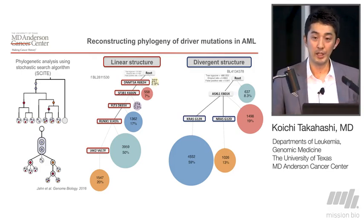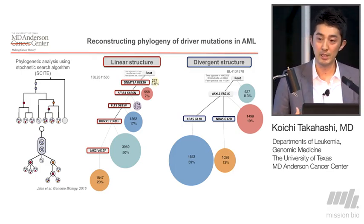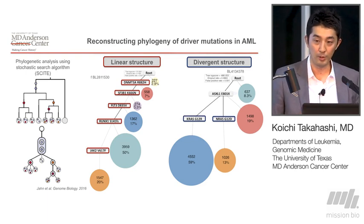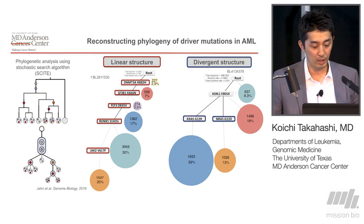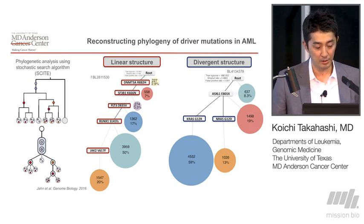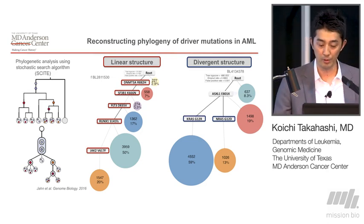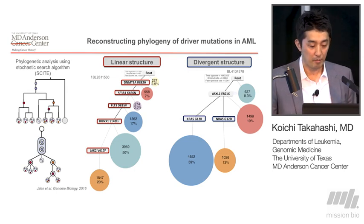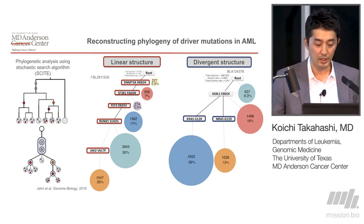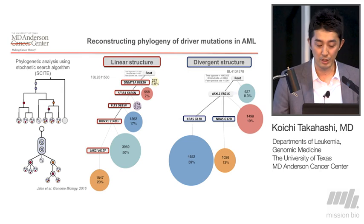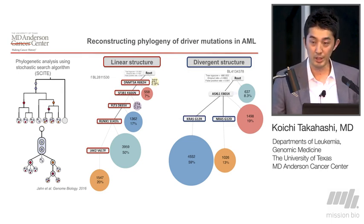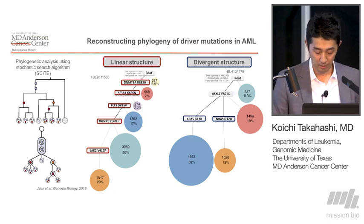Using this information, we can also infer how this AML was developed or evolved over time and created this clonal architecture. We collaborated with a group in Switzerland to use this algorithm to infer the clonal evolution model. Most of the cases we analyzed ended up having this type of linear acquisition model, but some cases showed this divergent structure where after acquiring one mutation, there was a separate independent branch acquiring several mutations.